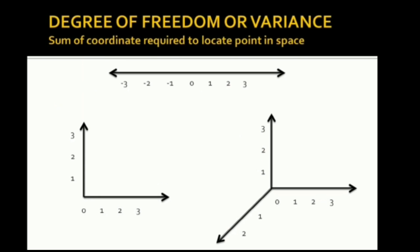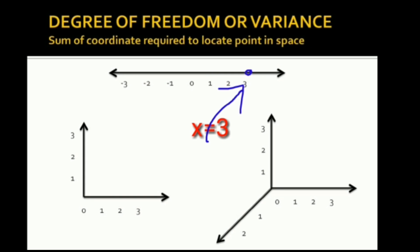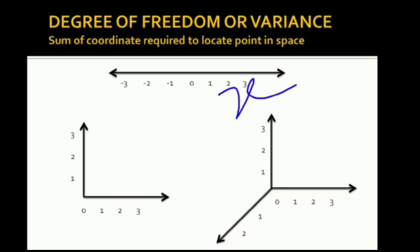Another definition of degrees of freedom: the sum of coordinates required to locate the position of a point in space is known as degrees of freedom. For a point on a line, only one coordinate is required to locate its position. If we say x equals 1, the point is at that position. So in order to locate a point on a line, only one coordinate is required — therefore degrees of freedom is 1.